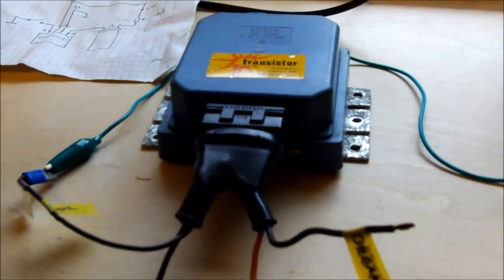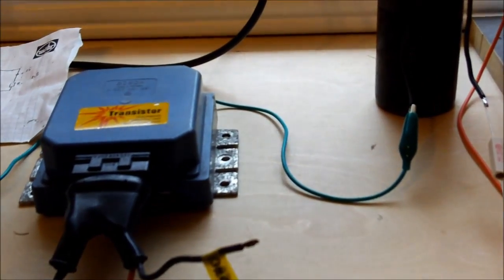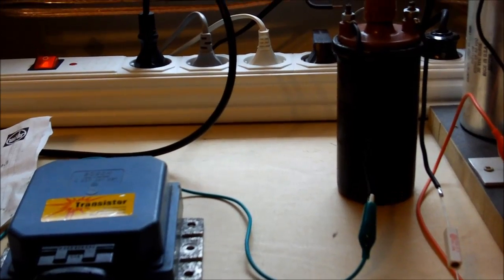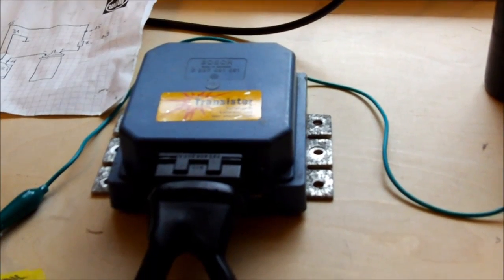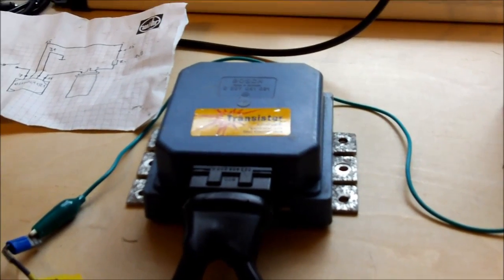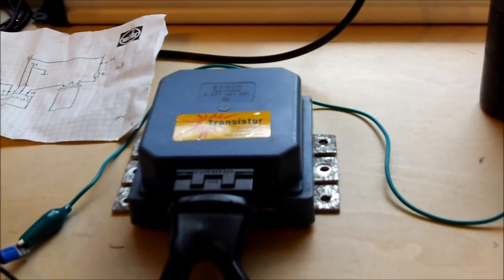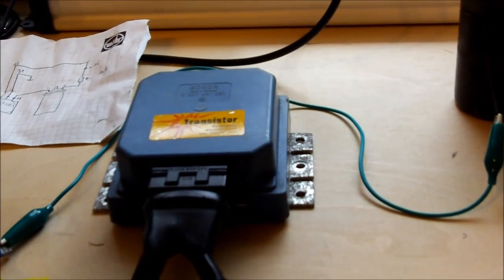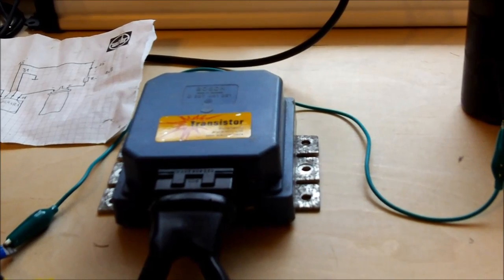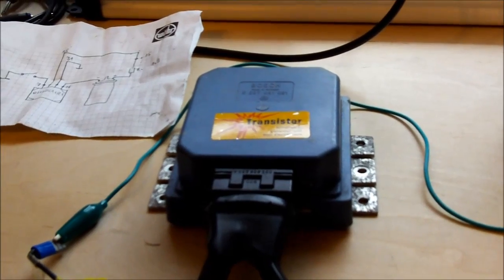For these old ignition modules it is very important to connect them via ballast resistors because those old power transistors are not designed for very high currents. If you connect them to a new coil with a very low coil resistance you will destroy the power transistor, the output stage of this ignition module.